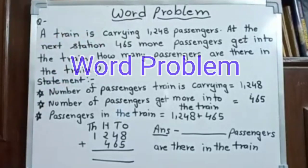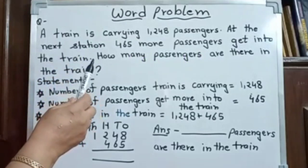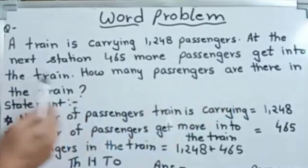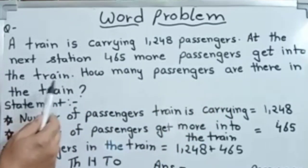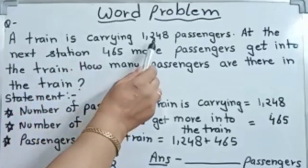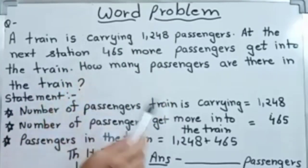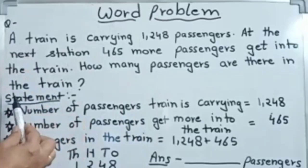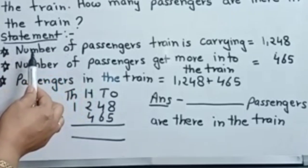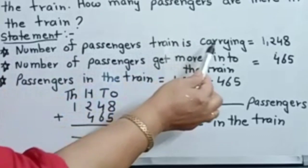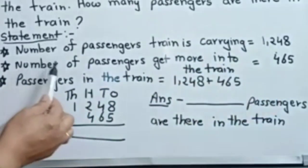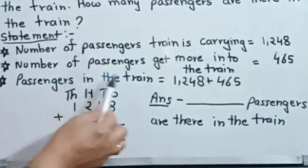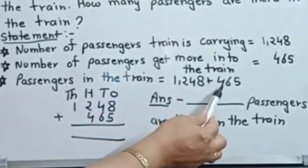Here you have a word problem. A train is carrying 1,248 passengers. At the next station, 465 more passengers get into the train. How many passengers are there in the train? 'How many' or 'total number of' means addition. 'More passengers' means addition. Start your statement always with 'number of.' Number of passengers the train is carrying: 1,248. Number of passengers that got more into the train: 465. Total passengers in the train: 1,248 plus 465.